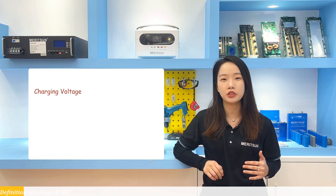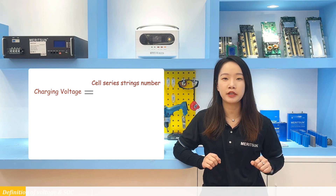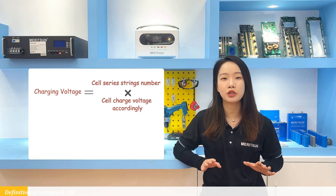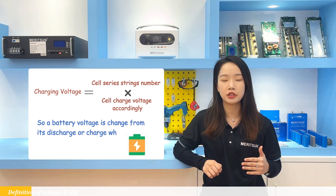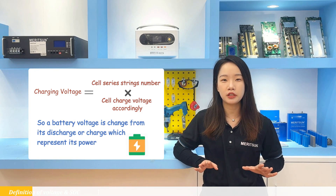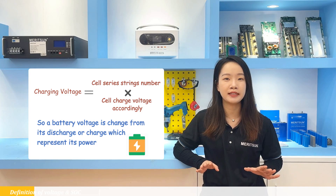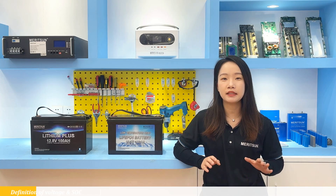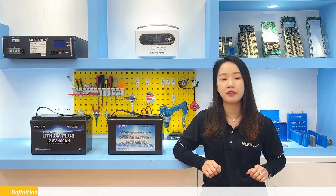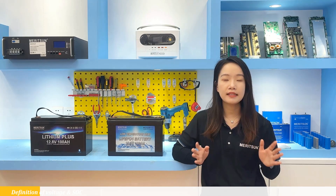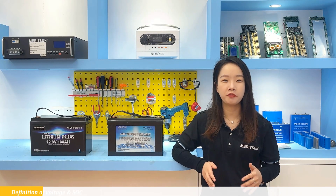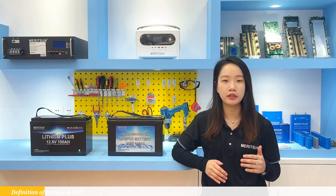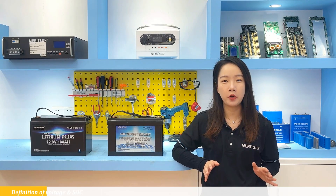its charge voltage is the cell's series string number multiplied by the cell's charge voltage accordingly. So the battery cell's voltage changes with its discharge or charge, which represents its power, and different voltage points indicate different remaining battery capacity. The state of charge — SOC — is the measurement of the amount of energy available in the battery at a specific point in time, expressed as a percentage.